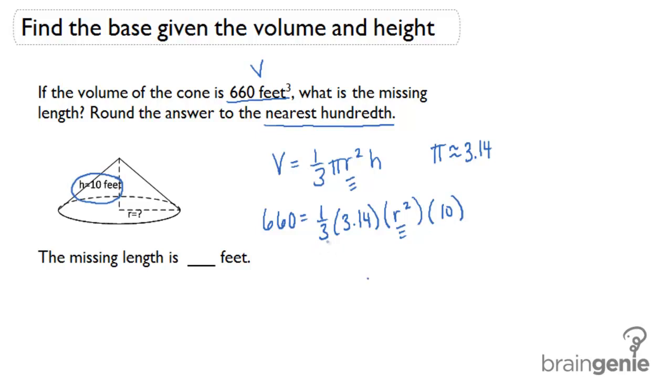So if I multiply one-third by 3.14 by 10 and then divide it by 660, I get 63.06 equals the radius squared.